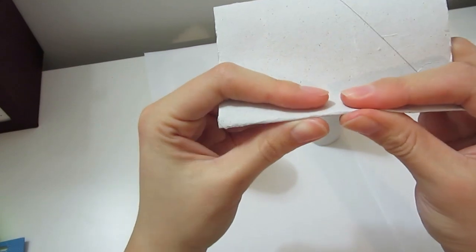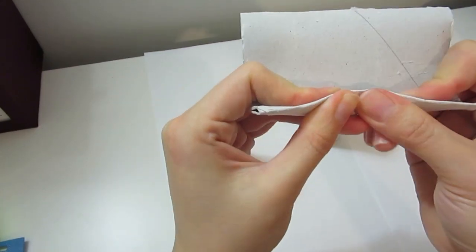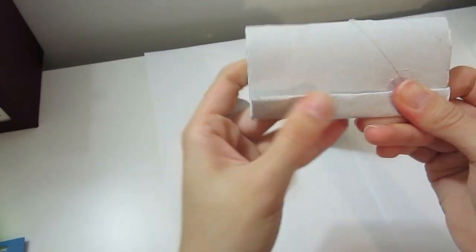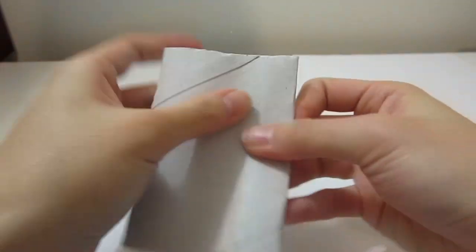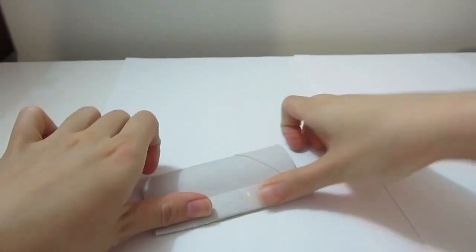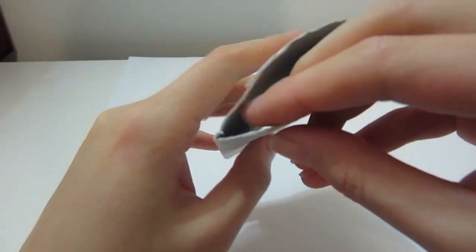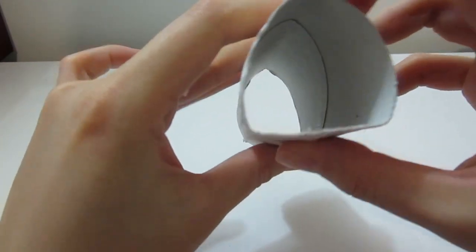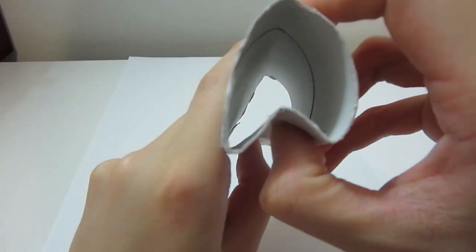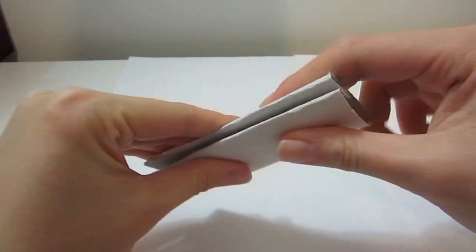Then on one side fold it back and forth at the one centimeter or half an inch point. Then open it up. Press inward at the tip to magically form a cherry blossom petal shape.